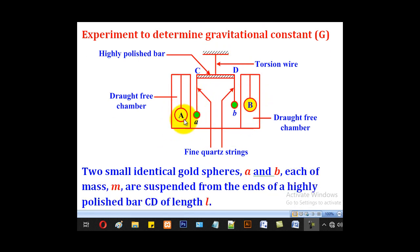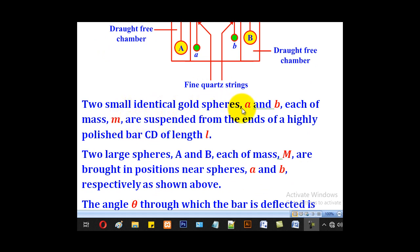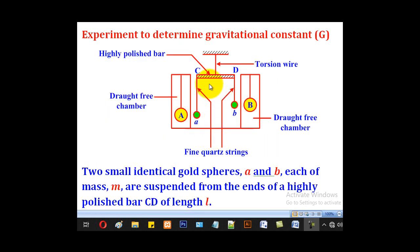Capital A and capital B are identical large gold spheres, and small a and small b are also identical small gold spheres. This is a highly polished bar CD, and this is a torsion wire with a torsion constant K per radian. The chamber is a draught-free chamber. Two identical gold spheres, small a and small b, each of mass small m, are suspended from the ends of the highly polished bar CD of length L.